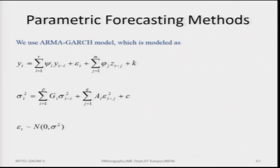The parametric forecasting methods we will try to incorporate into ANN include the ARMA-GARCH method, the Holt linear and Holt-Winters method, moving average, exponential moving average, and adaptive moving average. Based on these we predict Y-T using regressed values Y-(T minus 1), Y-(T minus 2), and so on, along with an error component. These explanations are kept brief because the main focus is on how ANN can utilize them.